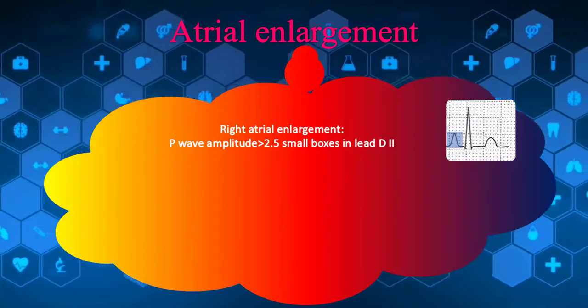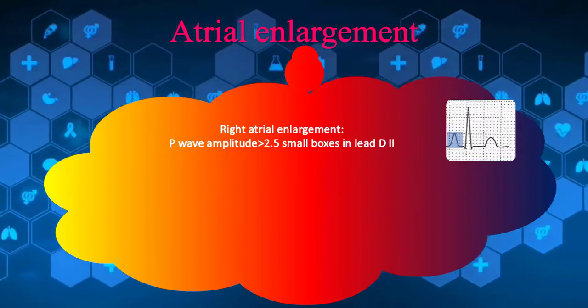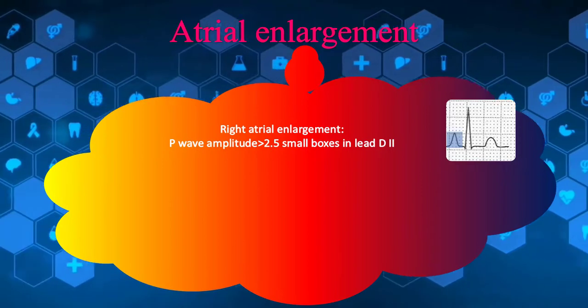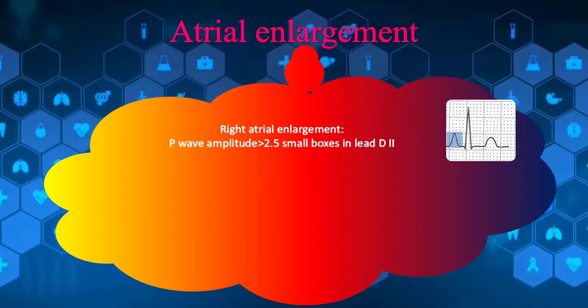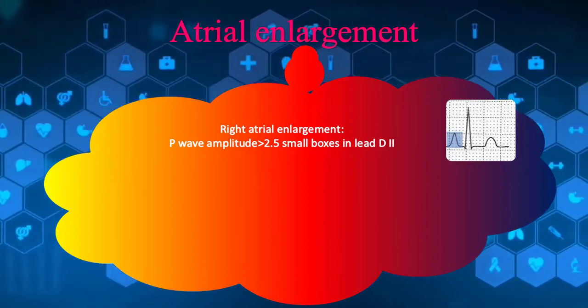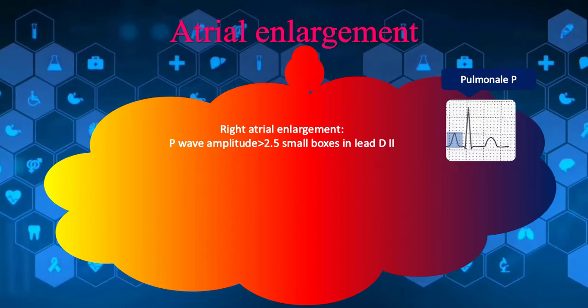P wave amplitude greater than 2.5 small boxes is indicative of right atrial enlargement. It is also known as P pulmonale waves.